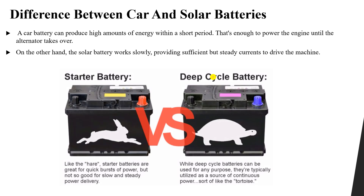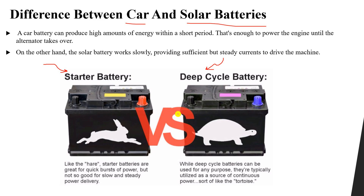If you look at the two types of batteries, the car battery is known as the starter battery and the solar battery is known as the deep cycle battery. If you look at these two batteries, you will find they appear similar to each other from the outside.